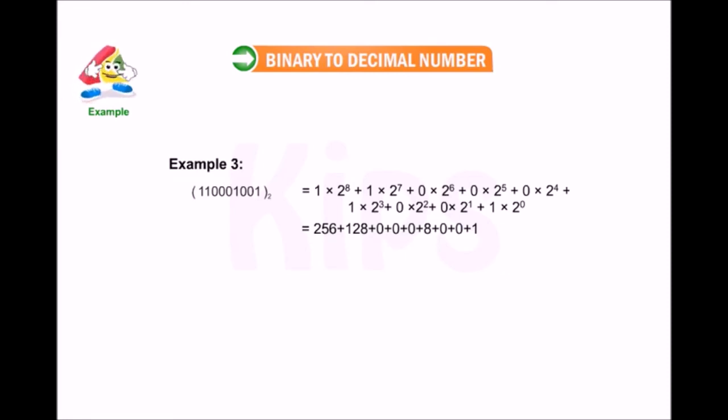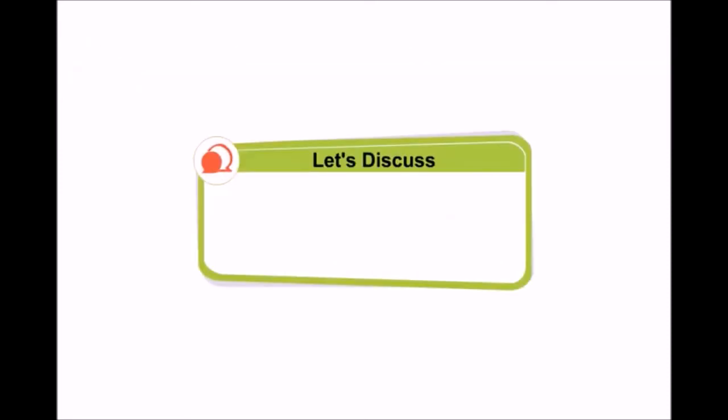That is equal to 393. Thus, 110000001 in binary can be written as 393 in decimal. Students, let us have a discussion on why we use binary number systems in computers.